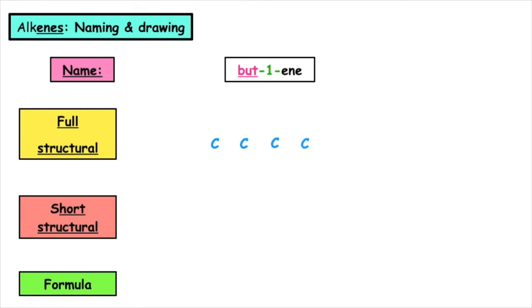We're going to number the carbons at the top, one to four, and on the bottom in the opposite direction. On position one, I have my very first carbon. That's where I'm going to put my carbon to carbon double bond. Then I'm going to fill out the rest of the bonds and fill out with hydrogens.